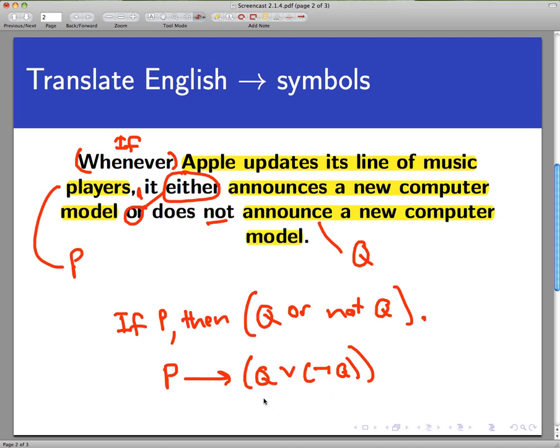Before we move on to the truth table, this statement here is kind of weird, isn't it? Q or not Q. If Apple updates its line of music players, it'll either announce a computer model or it won't. It seems like this ought to always be true somehow. Well, keep track of that feeling, and we'll see how it plays out in the truth table.